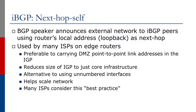We're now going to talk about the use of NextHopSelf. A BGP speaker will always announce its external network to IBGP peers using its loopback address as the next hop. This is used by many ISPs on edge routers since this is preferable to carrying DMZ point-to-point link addresses in the IGP. It also reduces the size of IGP to just core infrastructure. This is an alternative to using unnumbered interfaces, helps scale the network, and many ISPs consider this best practice.